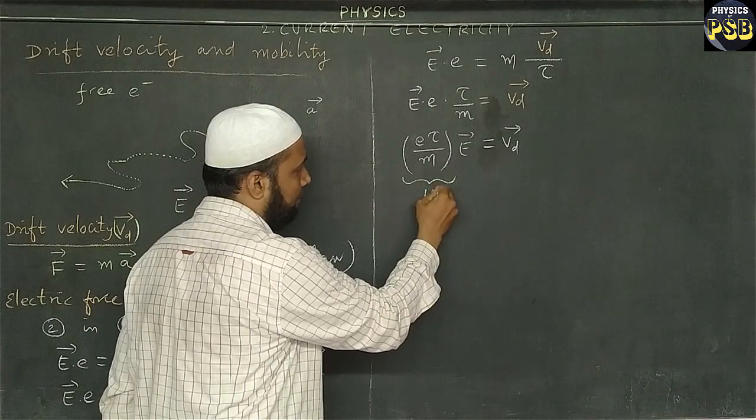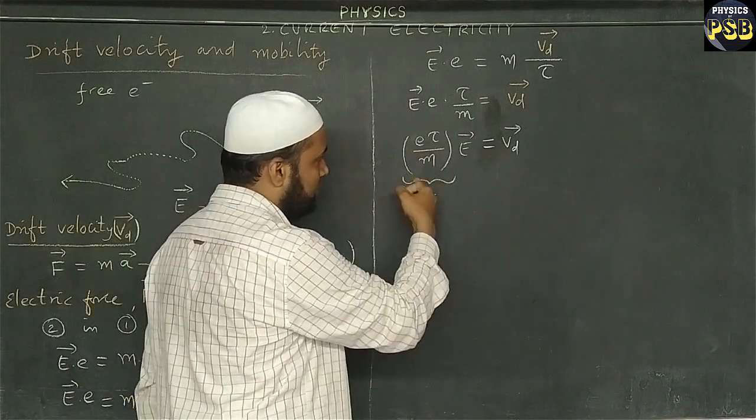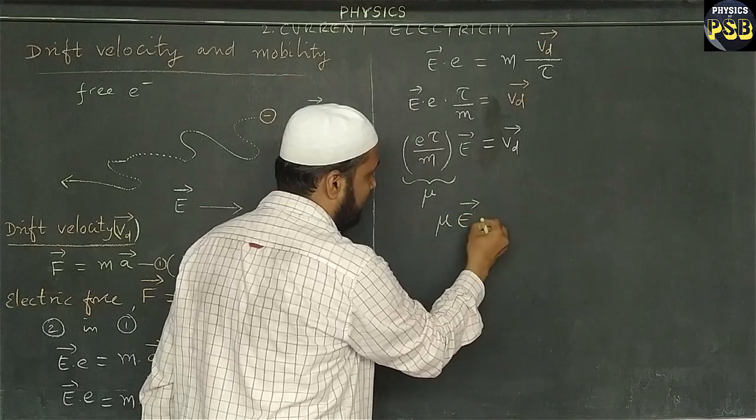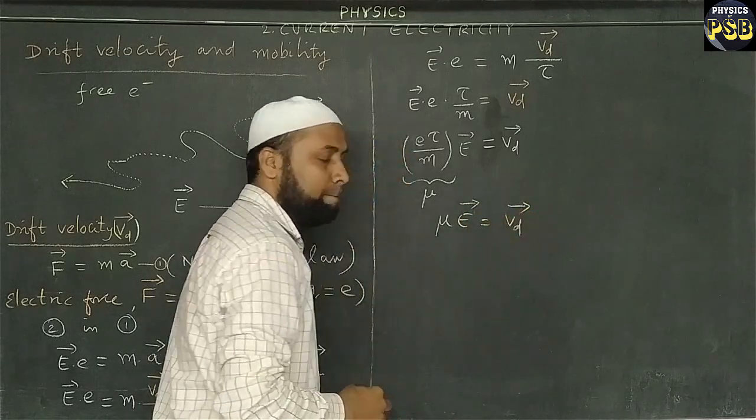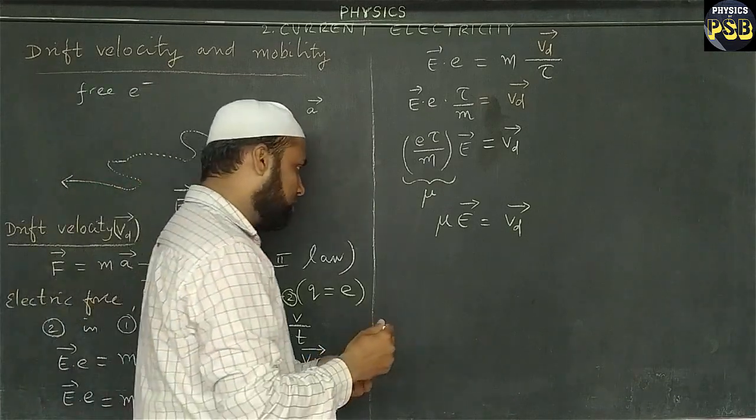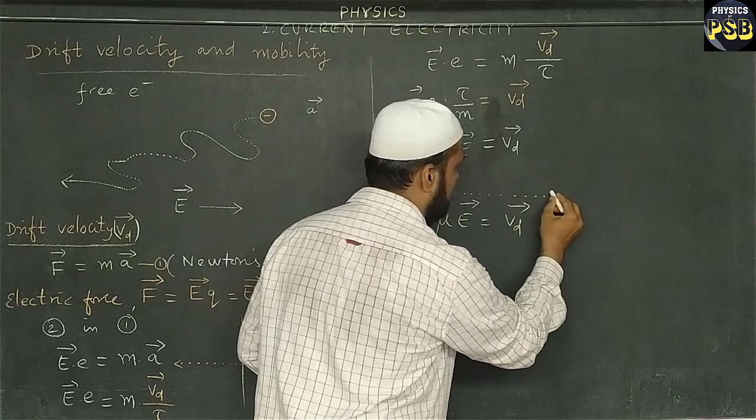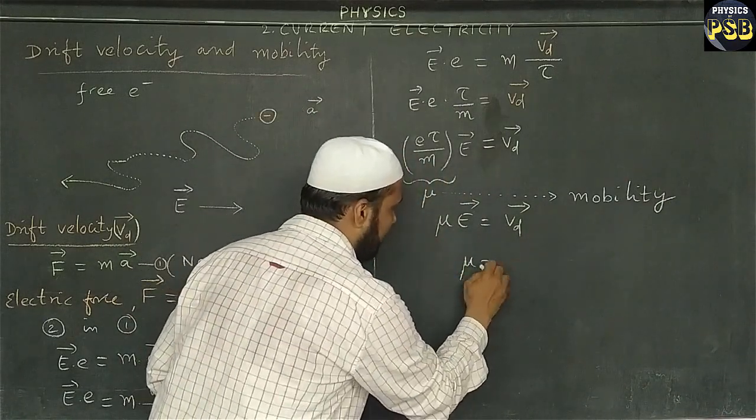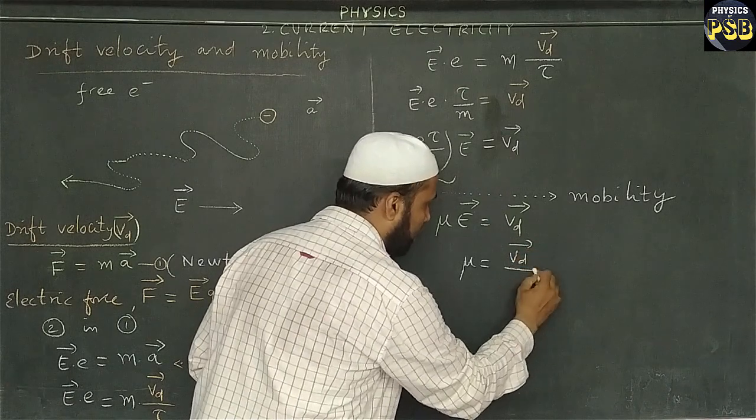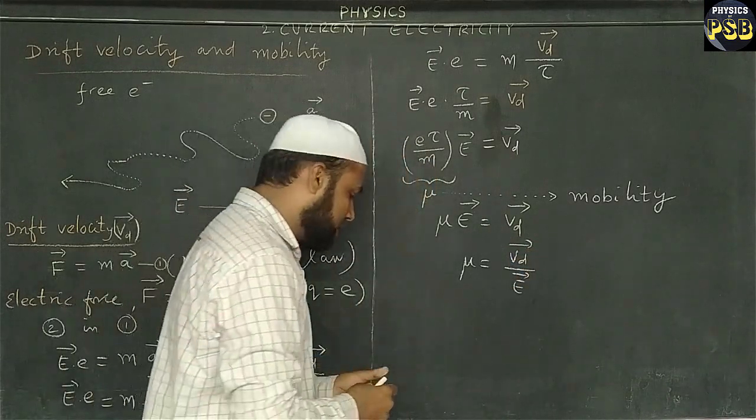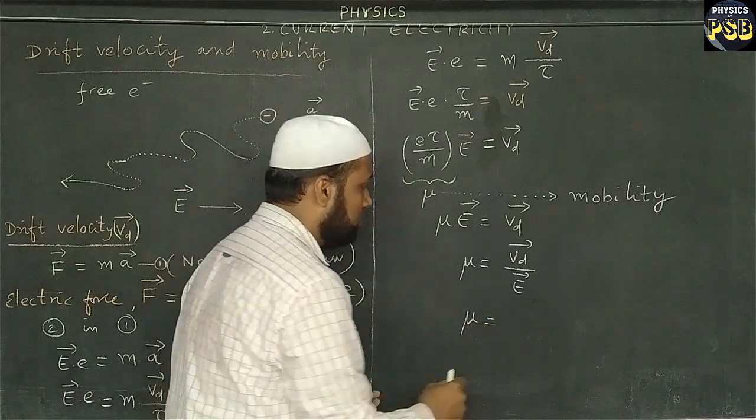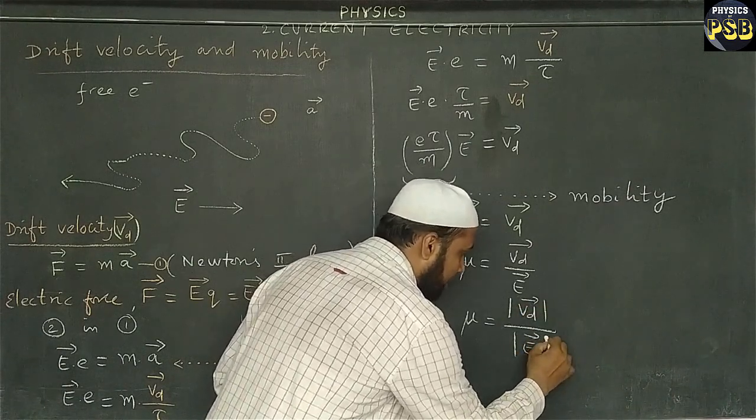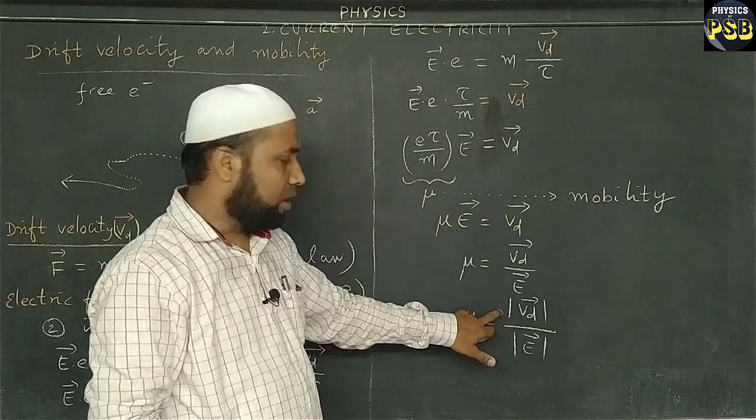Here this part is nothing but mu. Here mu is mobility. So I write this equation as mu E vector equals to Vd vector. I told you here mu is nothing but mobility. What is mobility? It can be written as Vd vector upon E vector. This can also be written as